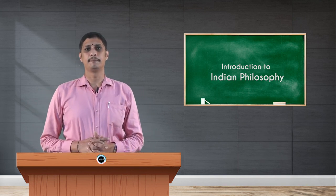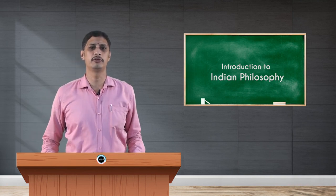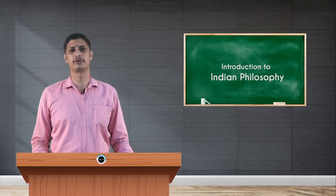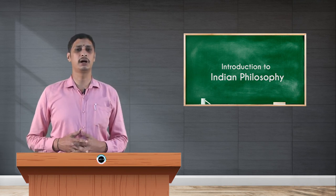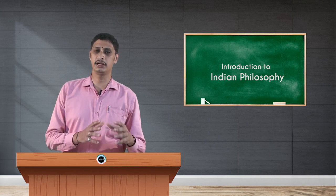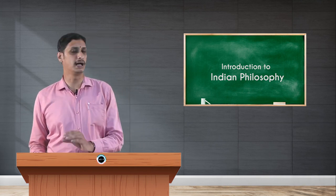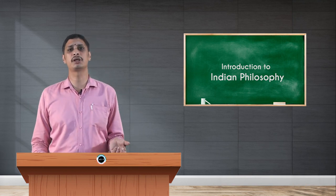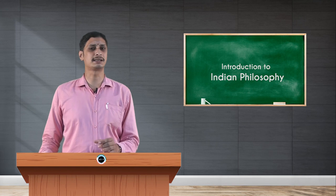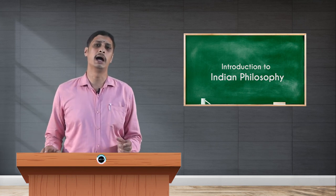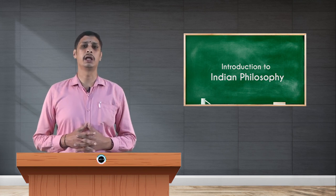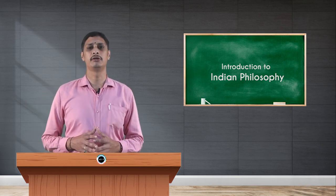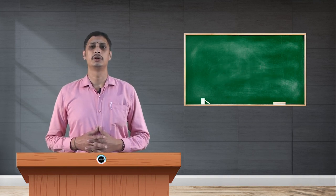Nasthika Darsanas do not believe in Vedic reliable sources and have their own Pramanas — Charvaka, Jainism, and Buddhism are the three Nasthika Darsanas. The Asthika Darsanas are Nyaya, Vaisheshika, Sankhya, Yoga, Purva Mimamsa, and Uttara Mimamsa. Totally nine philosophies are famous and familiar within Indian philosophy. Thank you.